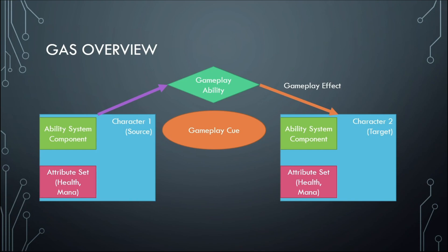Just to give an overview of how the gameplay system works: you have a character — Character One as the source and Character Two as the target. Both of these characters have an Ability System Component and also an Attribute Set. The Ability System Component is responsible for managing abilities and character ability activation.